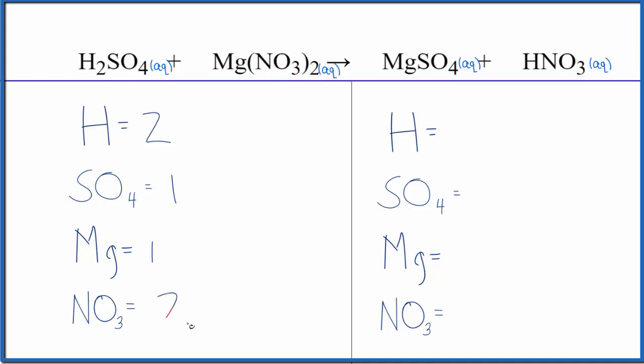Product side, we have one hydrogen, one sulfate, one magnesium, and one nitrate. You can see this is a lot easier to see what we need to do to balance the equation.